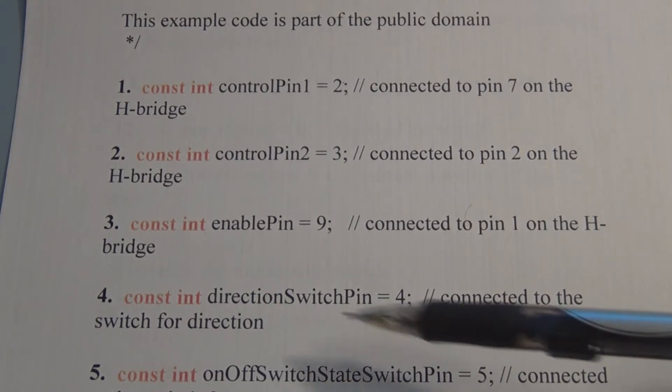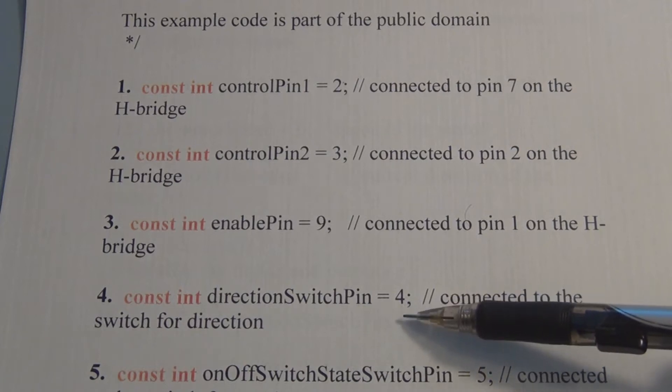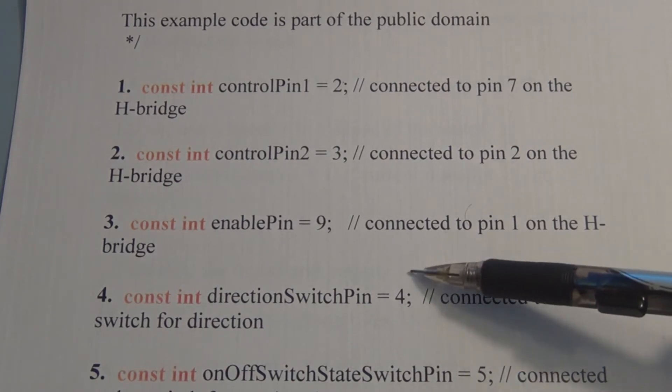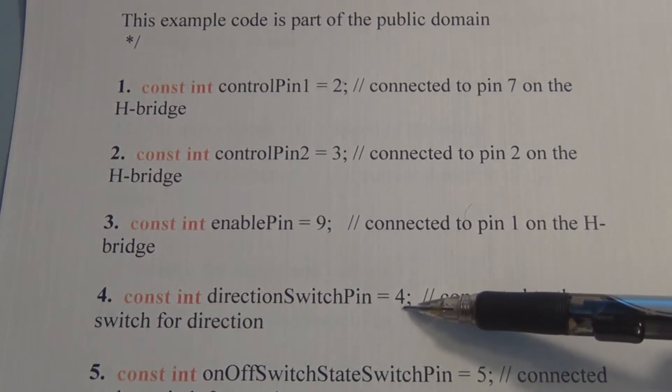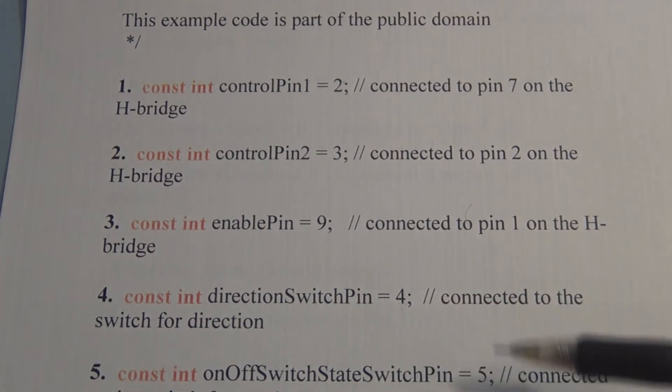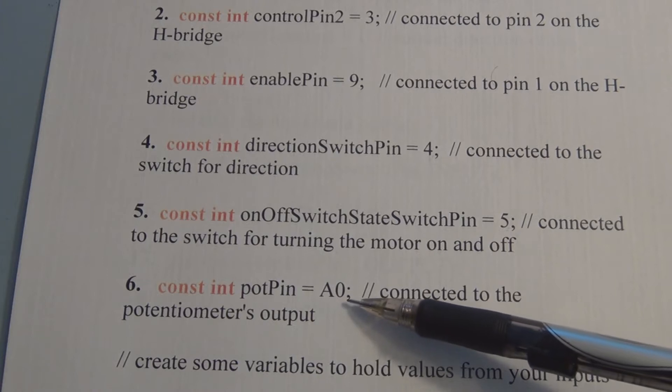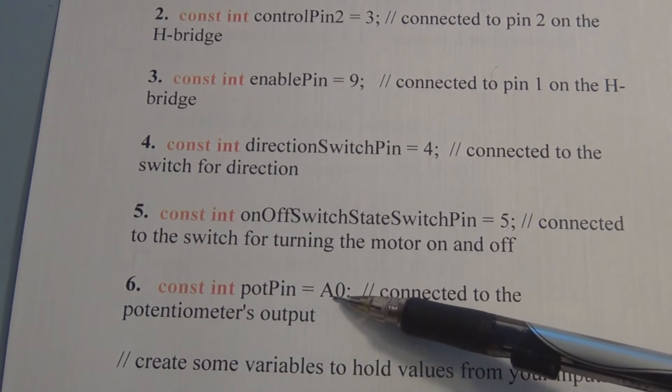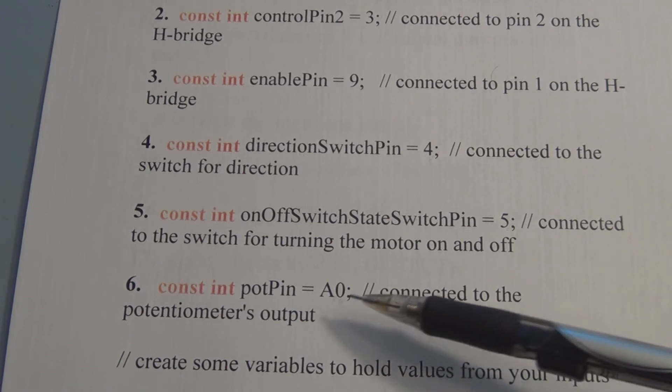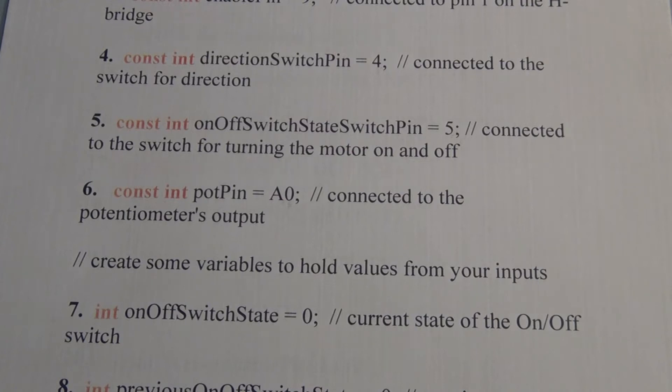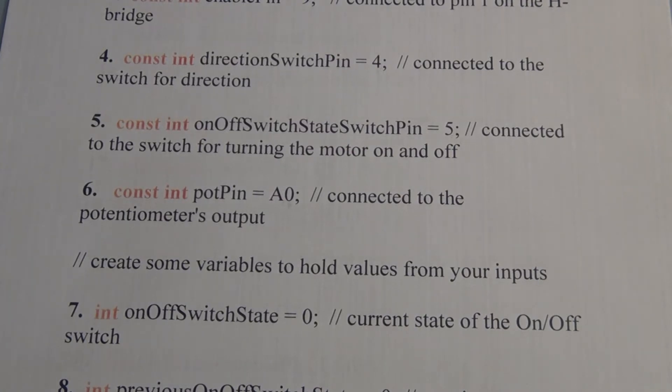So next we've got direction switch pin is pin 4 on the microcontroller on the Arduino and that's monitoring the toggle switch for direction change. We've got on off switch state, switch pin, pin 5 and that's monitoring the momentary switch there for on off. And A0 is an input. So pot pin is A0 on the microcontroller and that's monitoring the wiper arm of the potentiometer. It's monitoring the variable voltage.